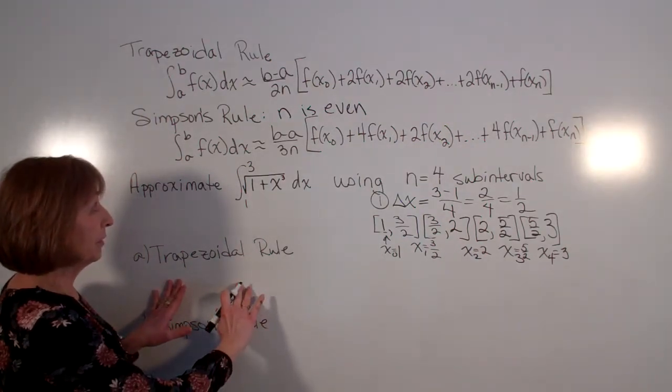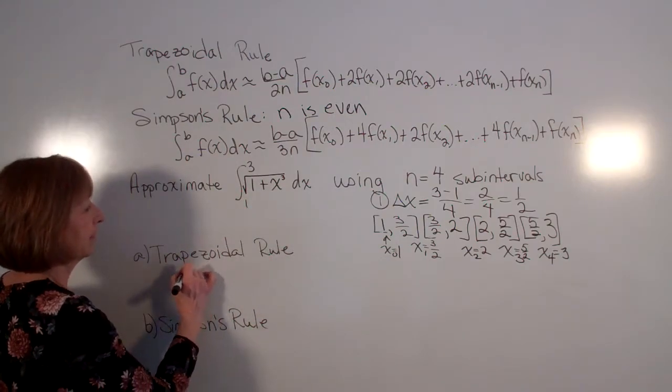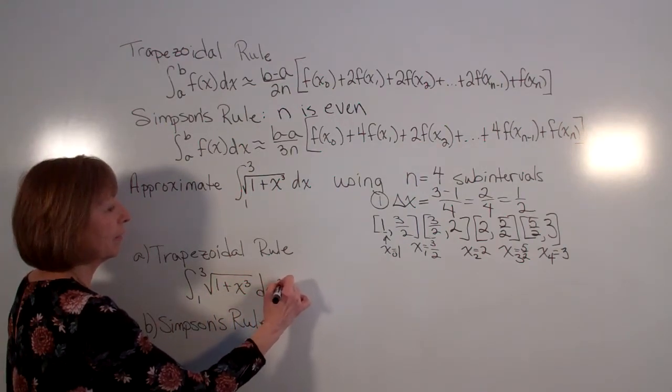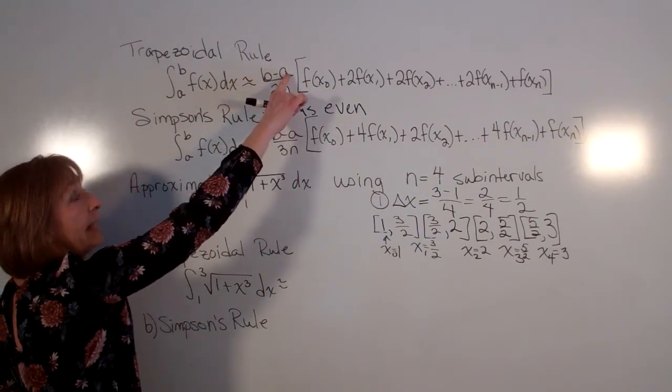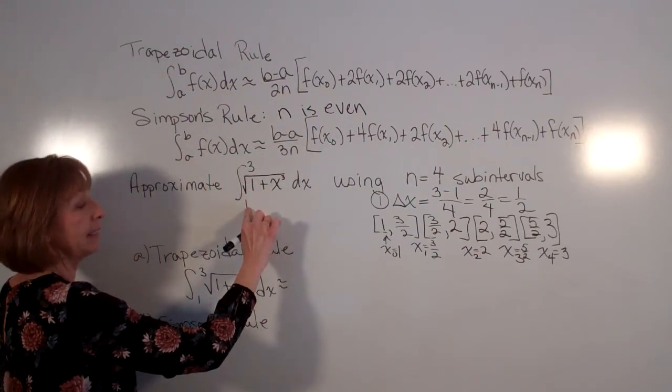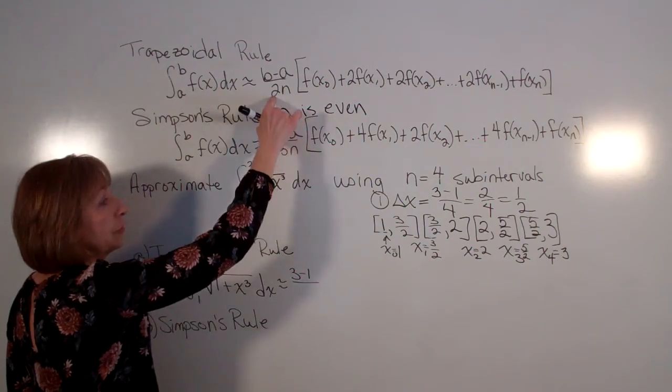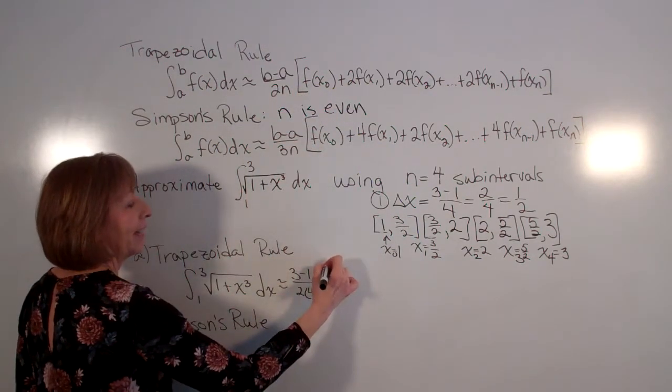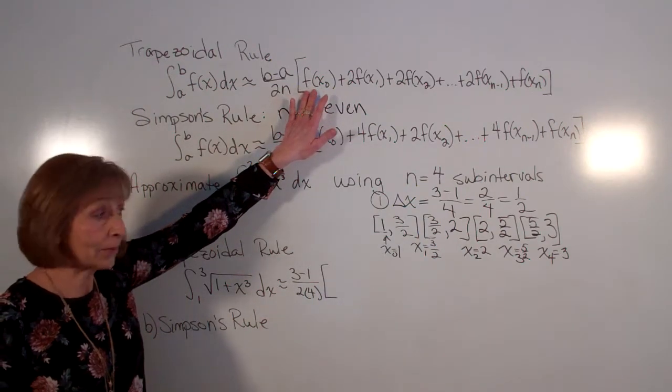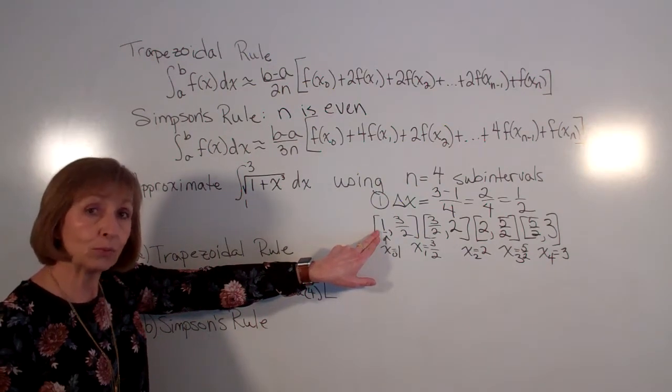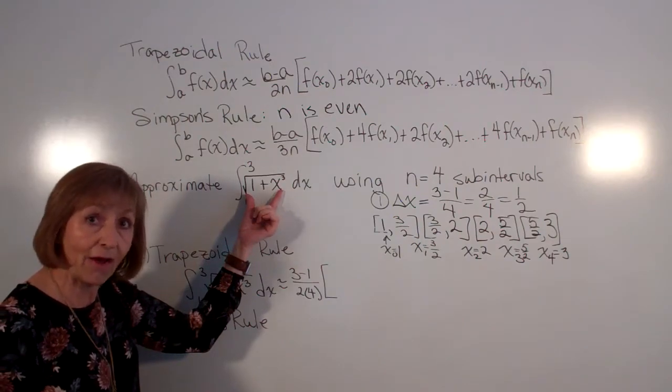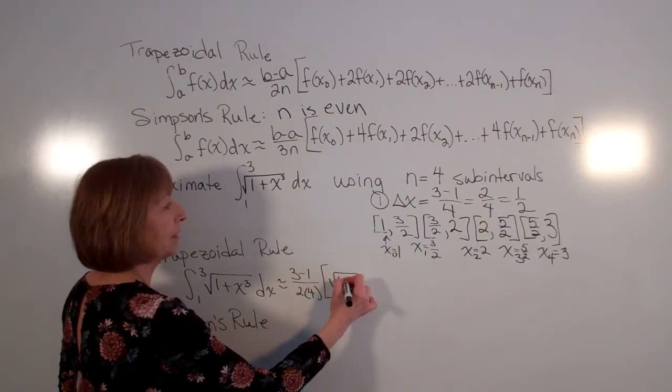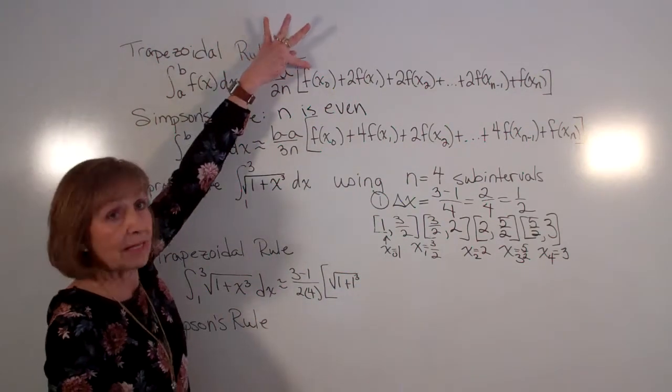Now when I look at the trapezoidal rule, our definite integral from 1 to 3 of the square root of 1 plus x cubed dx is approximately b minus a over 2n. So 3 minus 1 over 2 times 4. And then that's times f of x sub 0. So take your x sub 0, in this case is 1, and run it through the function. And the function is the integrand of your definite integral that you are approximating. So that's going to be the square root of 1 plus 1 cubed. So that's my f of x sub 0.